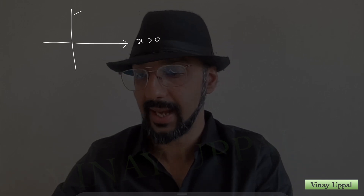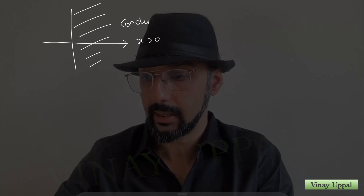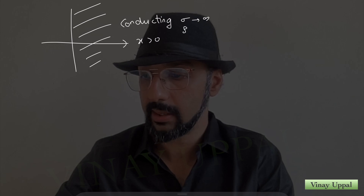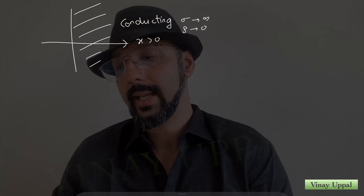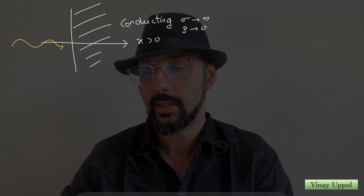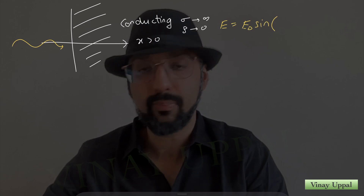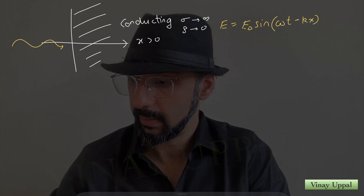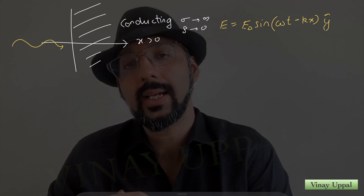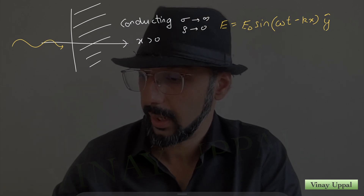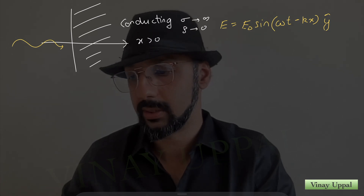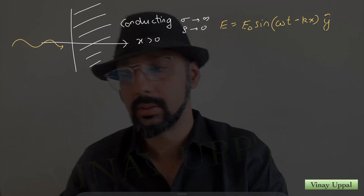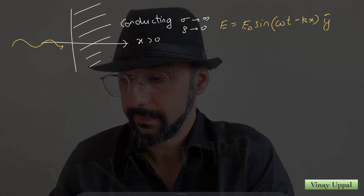Let's take a look at what is happening in this question. x greater than 0 is a conducting slab — a perfect conductor with conductivity tending to infinity and resistivity tending to 0. An EM wave is incident on it. Let's say the EM wave is E₀ sin(ωt − kx) ŷ, polarized along the y-axis, propagating along the x-axis at the speed of light. x less than 0 is vacuum.